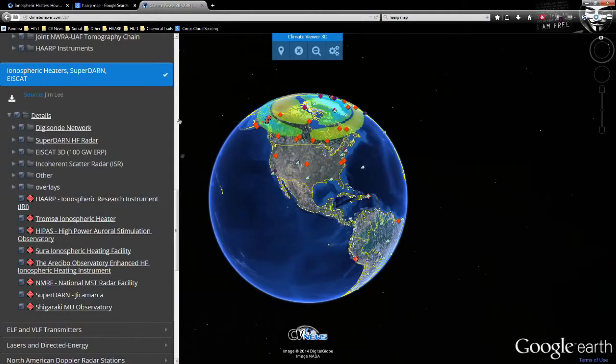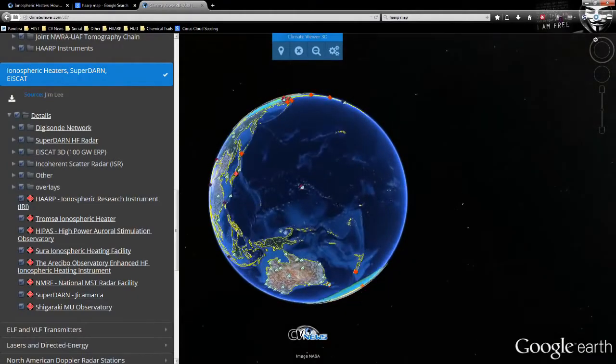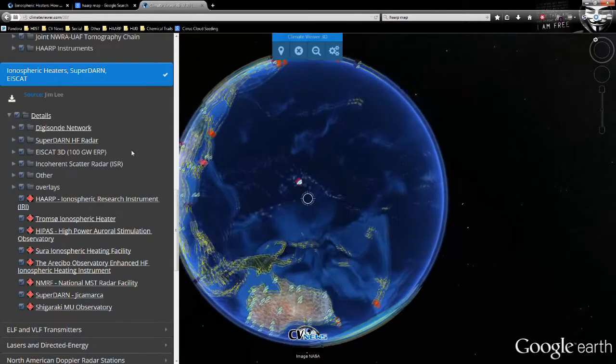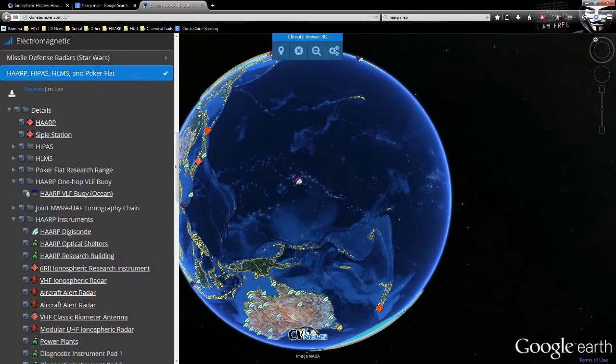Now, why am I telling you this? Well, they have a thing out here in the middle of the ocean. It's called the HAARP buoy, and it's part of the one-hop experiment. And you can see it right here, HAARP buoy.